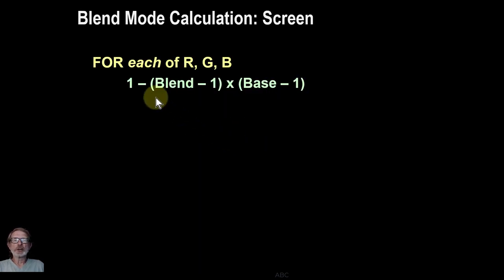The overall calculation as a formula is 1 minus blend minus 1, which is the inverse of blend, multiplied by the inverse of base. And as you can see here, you could switch the base and blend layers and you get the same effect. So it's commutative.